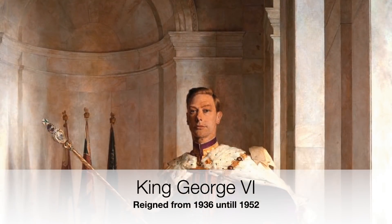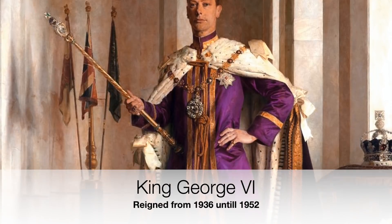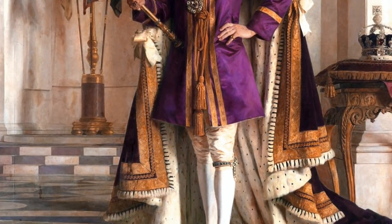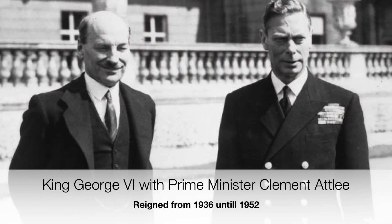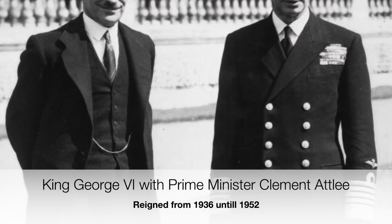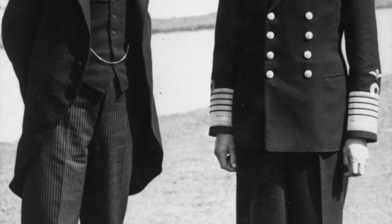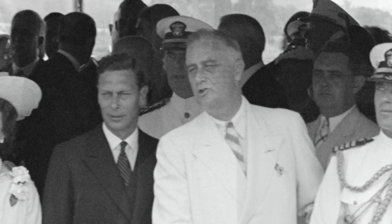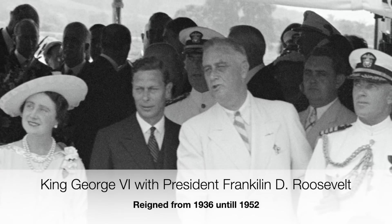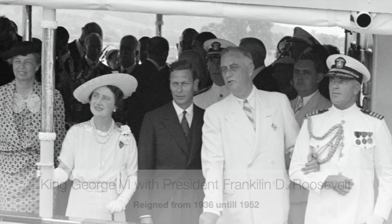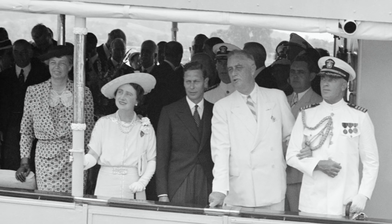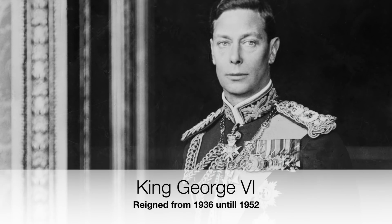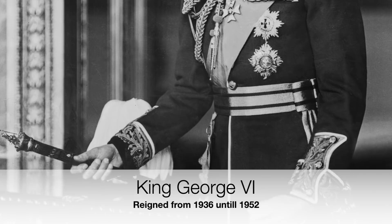Elizabeth is a direct descendant of George VI, her father. George VI was King of the United Kingdom from 1936 until his death in 1952. George and subsequently his daughter Elizabeth only became monarchs due to the abdication of George's brother, Edward VIII. George, known as Bertie to those close to him, was born in the reign of Queen Victoria, his great-grandmother, and was also named after his great-grandfather, Prince Consort Albert.